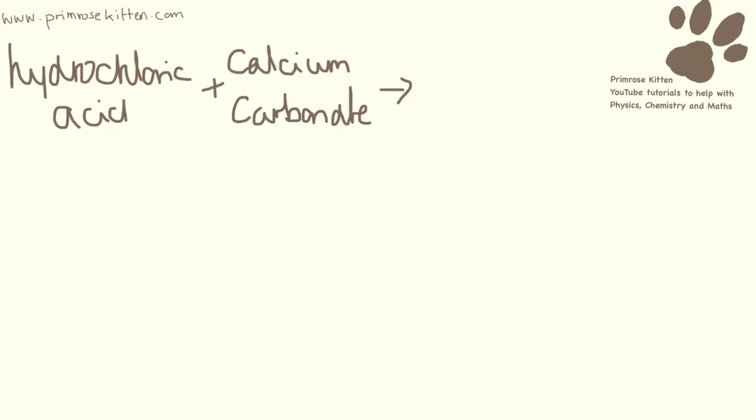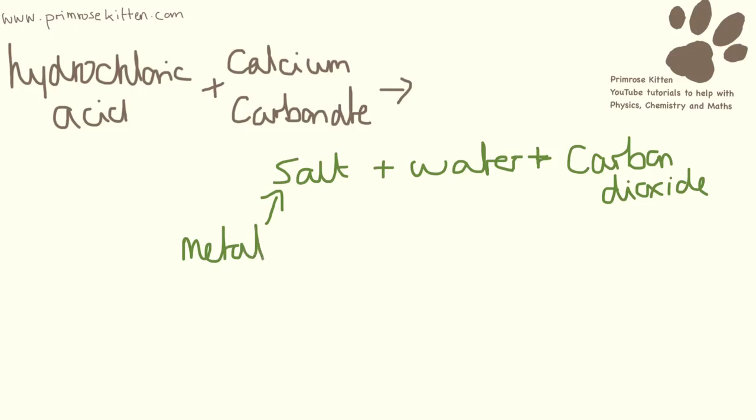So hydrochloric acid and sodium carbonate. We know we are going to get a salt, water, plus carbon dioxide produced. Now that bit is nice and easy, but what we need to do now is to be able to name this salt. And I've told you it is going to be a metal to start off with.